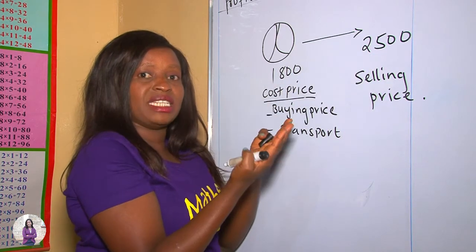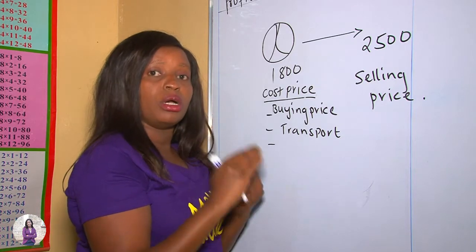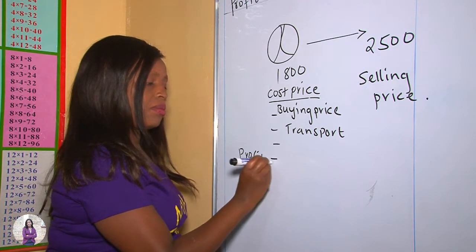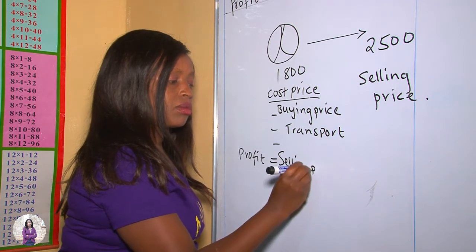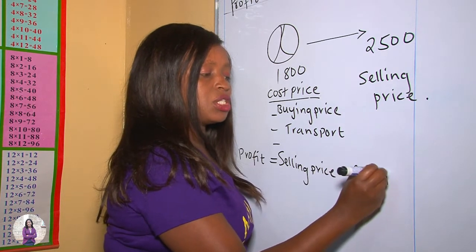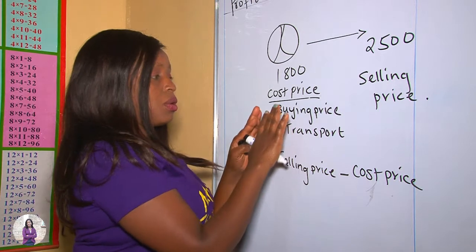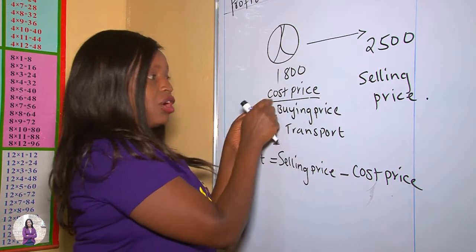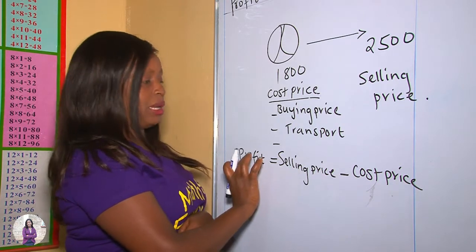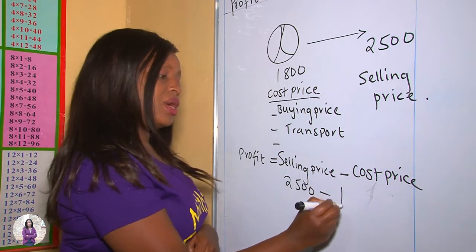So how much extra money does he make? The extra money you make after selling an item at a higher price than the buying price is what you call profit. Therefore, profit equals selling price take away buying price, or cost price. Remember, cost price could mean either buying price or even transport — buying price and transport are both inclusive in cost price.